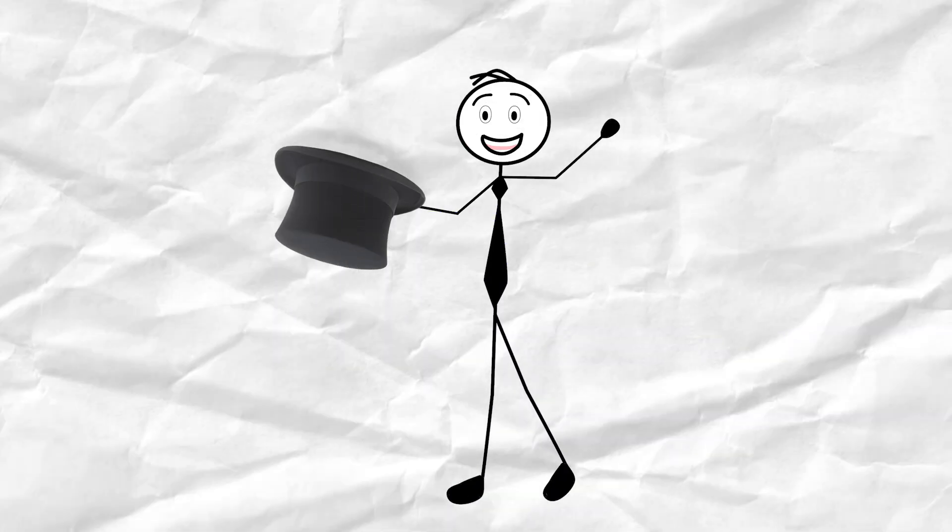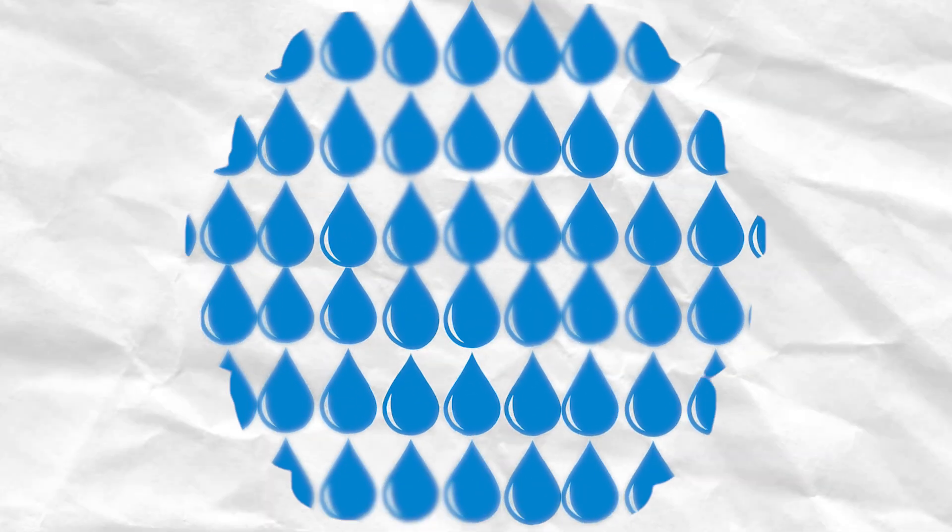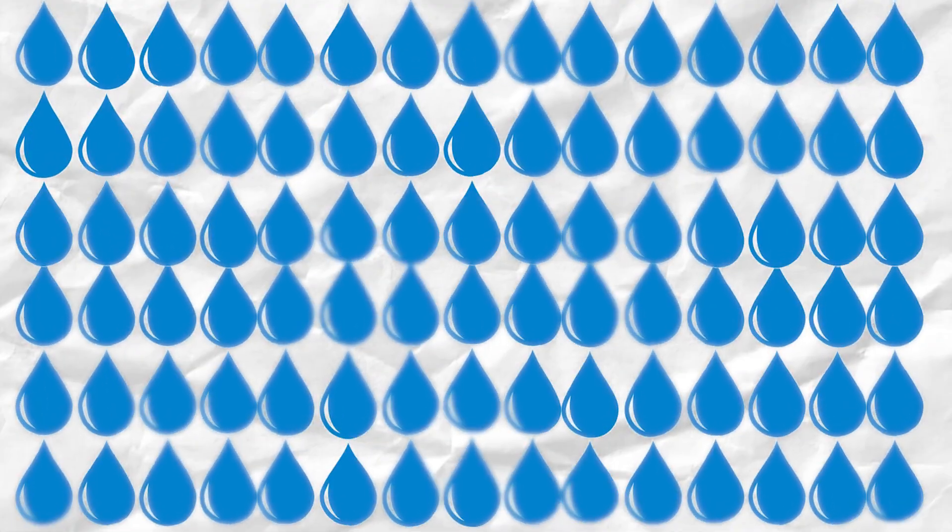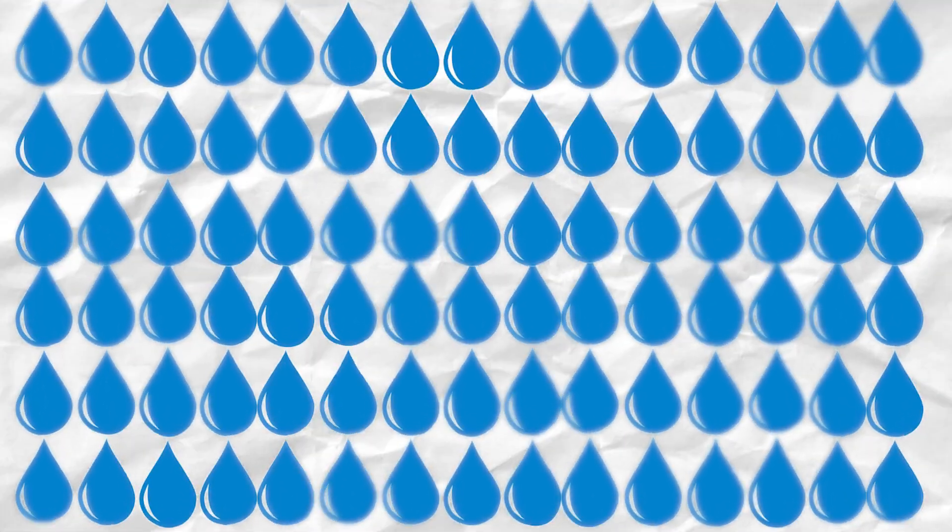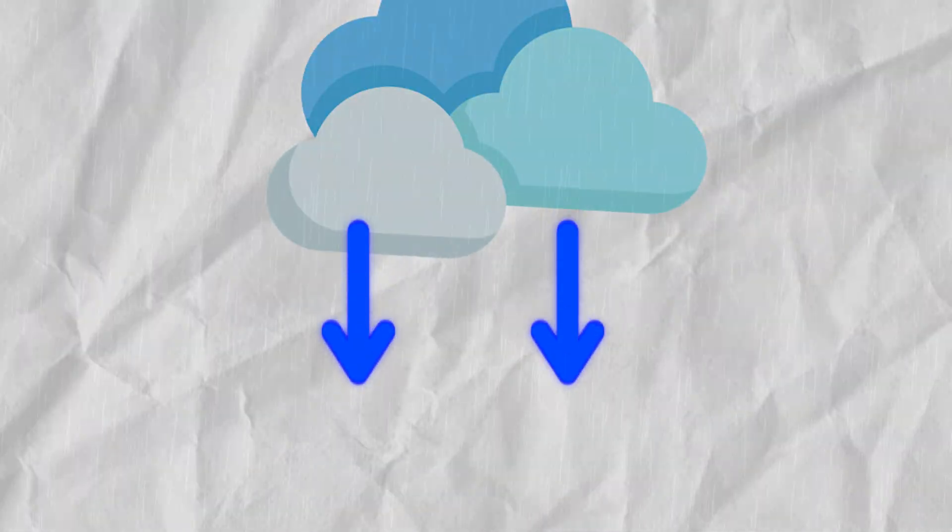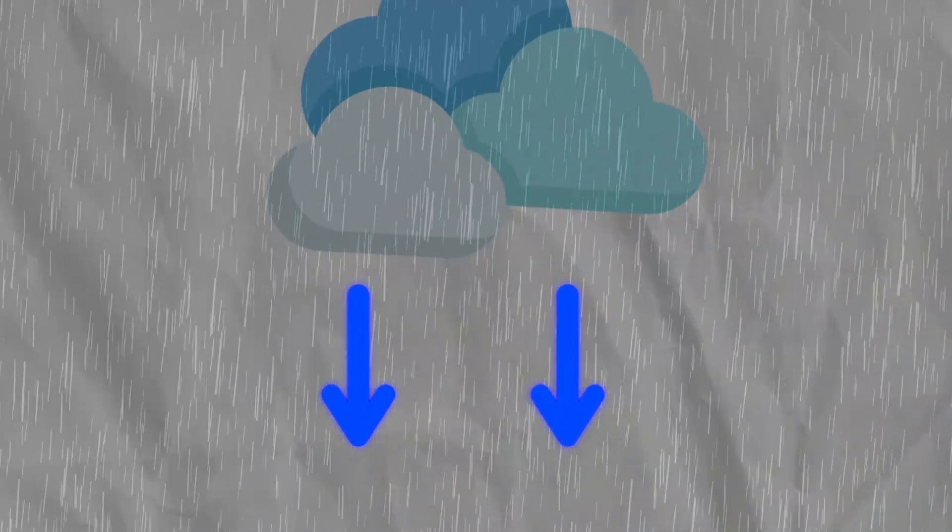Now, here's where the magic happens. Millions, no, billions of droplets are bumping and merging. Eventually, some droplets get big enough and too heavy to stay afloat. Then gravity says, time to fall. That's precipitation.